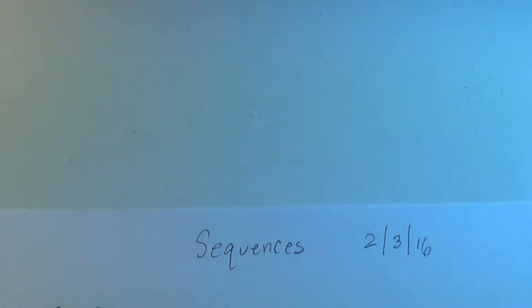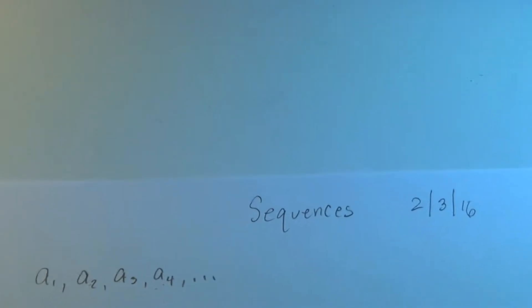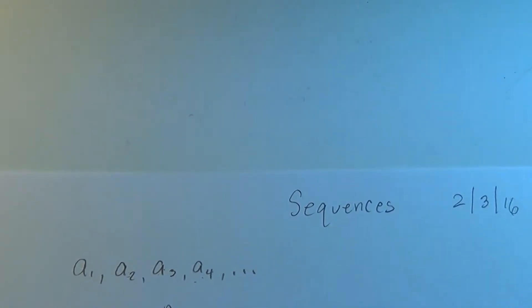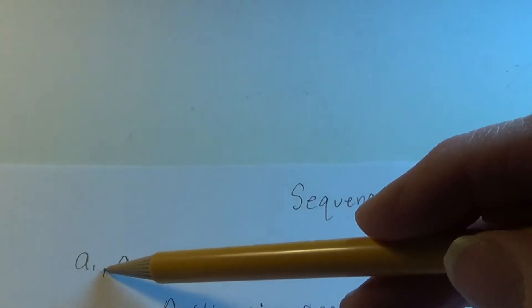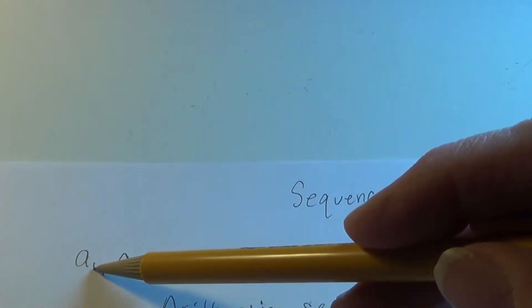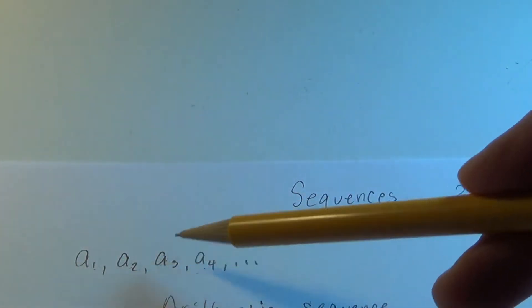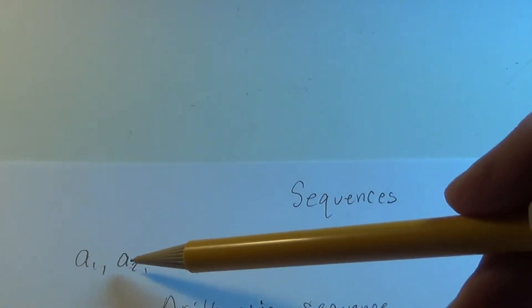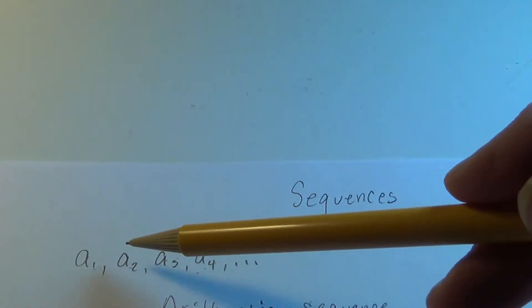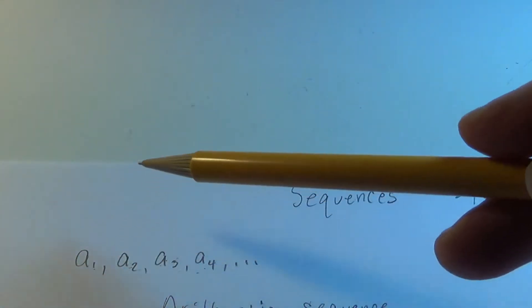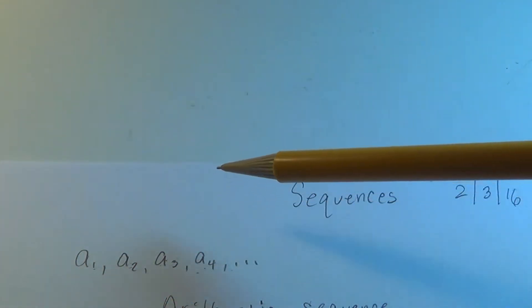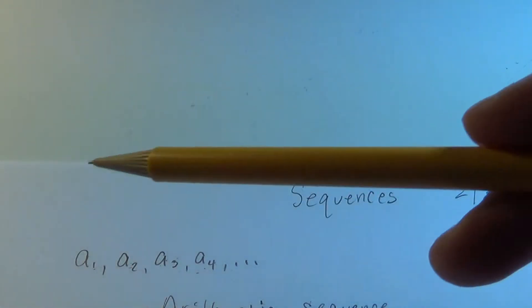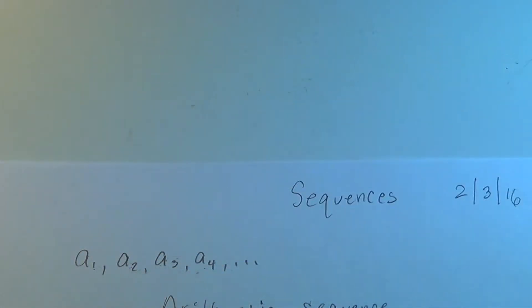We have observed that a way to represent a sequence in general is a letter with a subscripted variable. So this tells me I'm looking at the first term, the second, the third, the fourth, and so on. They are in a special order. A sequence is an ordered set of numbers.